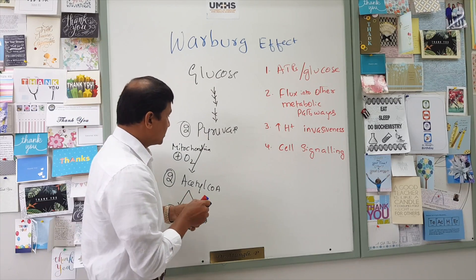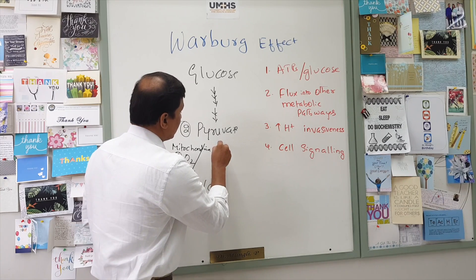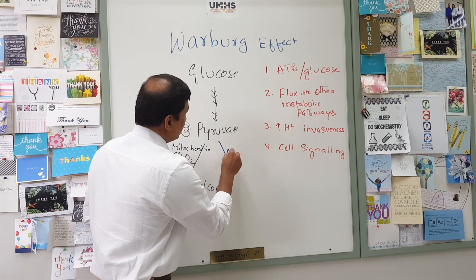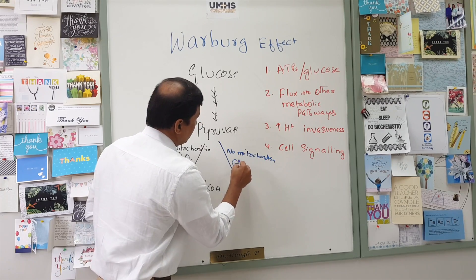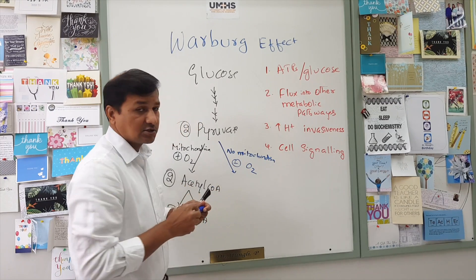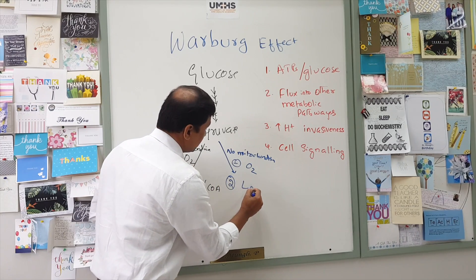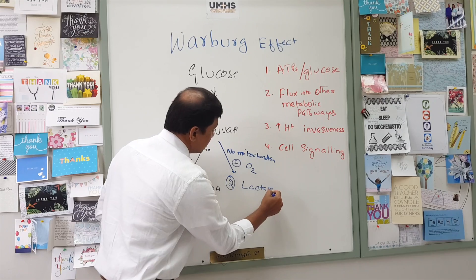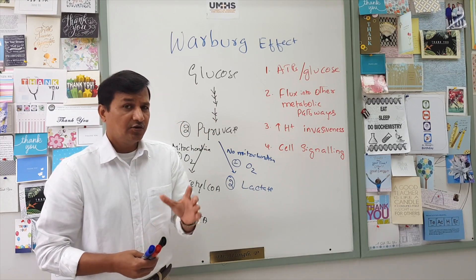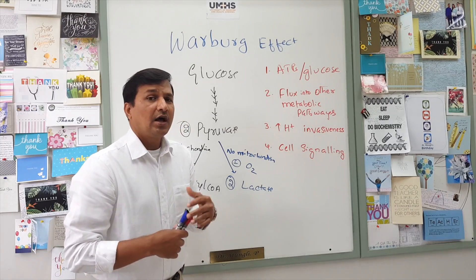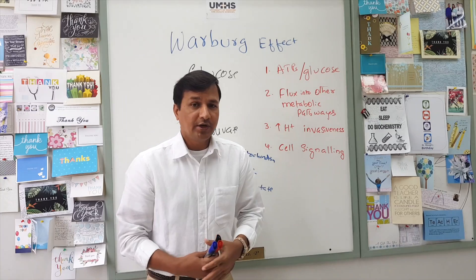Now, what happens if the cell does not have mitochondria or does not have sufficient oxygen? In that case, the two pyruvates will be converted into two lactate molecules — this is referred to as anaerobic glycolysis. One glucose undergoing anaerobic glycolysis gives only two ATPs.